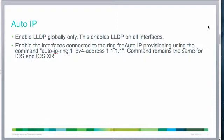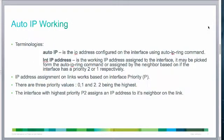The auto IP address has to be configured on the interfaces participating in the ring using the command 'auto IP ring 1'. This command has to be configured on the interface.